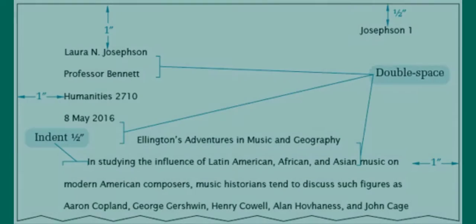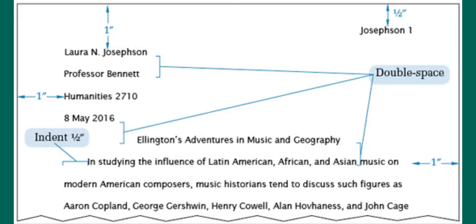On the first page of the paper, include some basic information about yourself and the paper. Starting on the top left, write your name on the first line. The next line will have the instructor's name, followed by the course number. The date is on the last line of the heading, written in day, month, and year format. These elements should all be double-spaced.